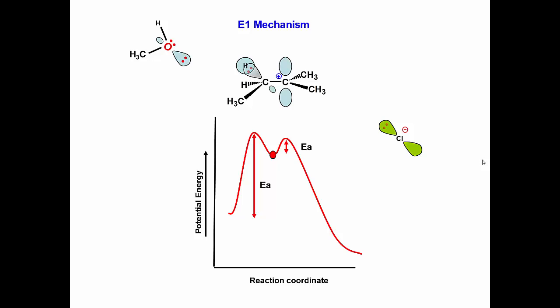The second step, the solvent, which is also a weak base, abstracts the hydrogen adjacent to the positively charged carbon to form an alkene.